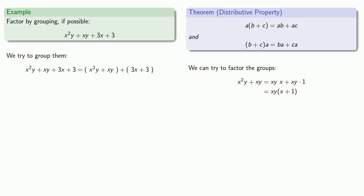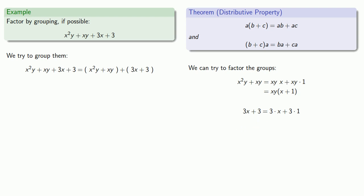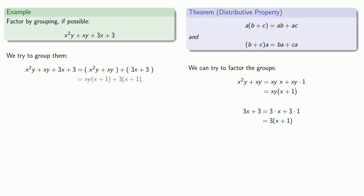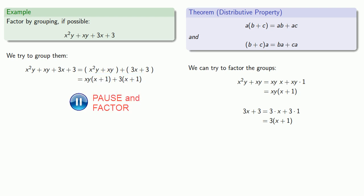This other set of terms, 3x plus 3 — both terms, 3x and 3, have a common factor of 3. So we can remove it, giving us a factorization. Now our new expression has both terms with a common factor of x plus 1, so we can remove it, giving a factorization.